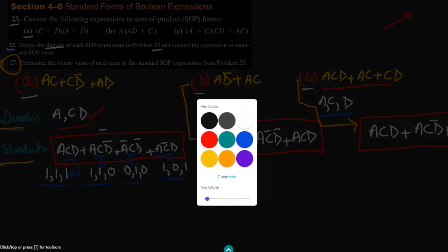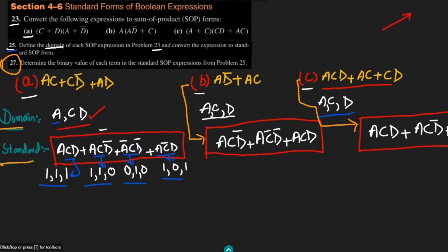Similarly, for part B here we have to find the binary values. For ACD prime it should be 1, 1, 0. For AC prime D prime it should be 1, 0, 0, and here it will be 1, 1, 1.